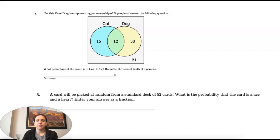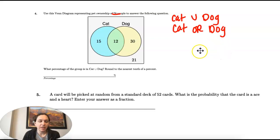So number four, same Venn diagram, same 78. What percentage of the group is in cat or dog? So remember that means or. So when we're looking at a Venn diagram, this is this whole thing.